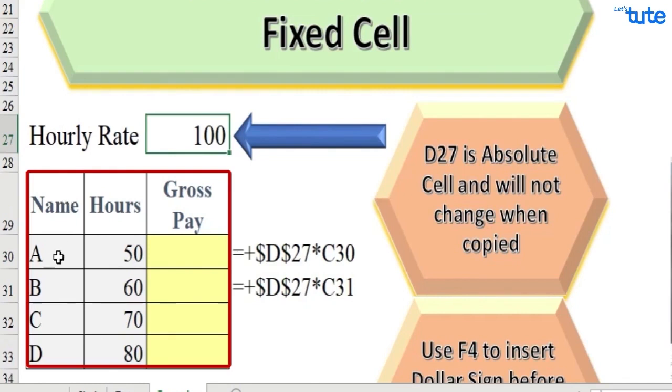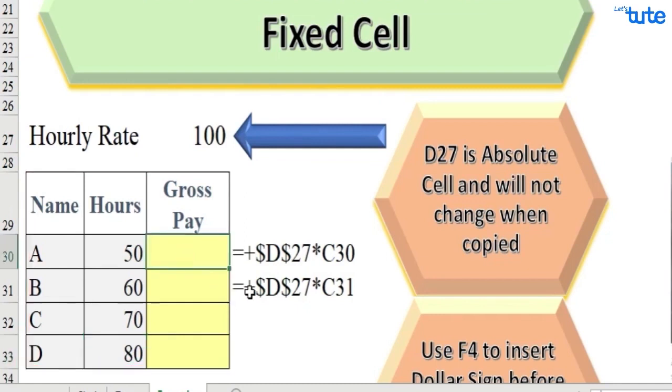First column is name of the employee: A, B, C, D. Second column is hours: 50, 60, 70, 80. And we need to calculate the gross pay. So the formula will be hours multiplied by hourly rate, right? But here the hourly rate of 100 is fixed, so that is the fixed cell reference.